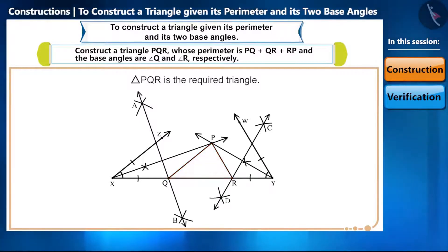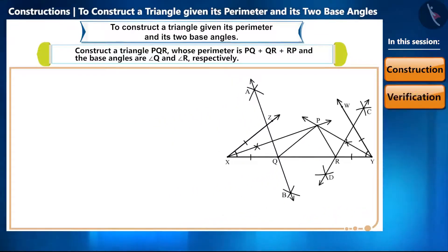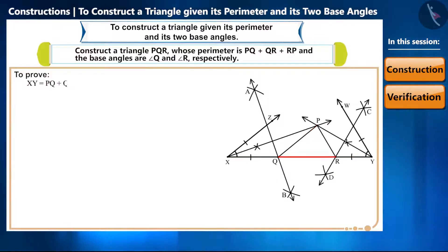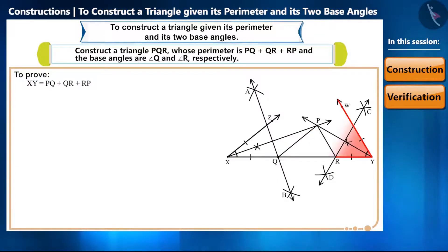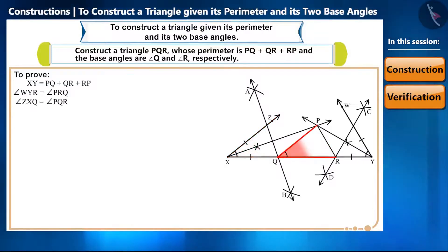We will have to prove that the given construction is correct, so let's verify it. We need to prove two parts: in the first part, we prove that XY equals PQ plus QR plus RP. In the second part, we prove that angle WYR equals angle PRQ, and angle ZXQ equals angle PQR.